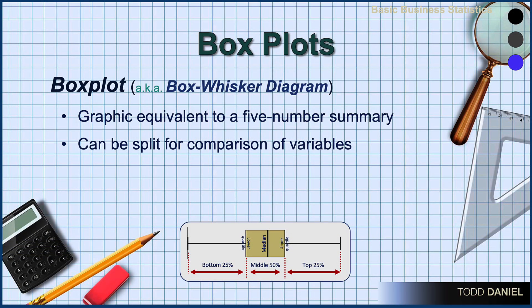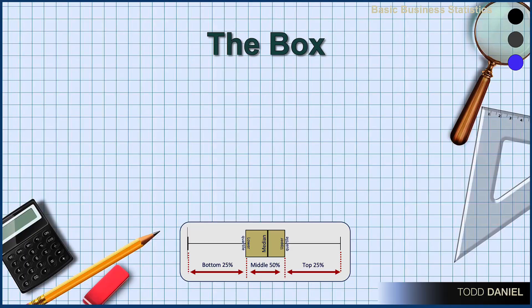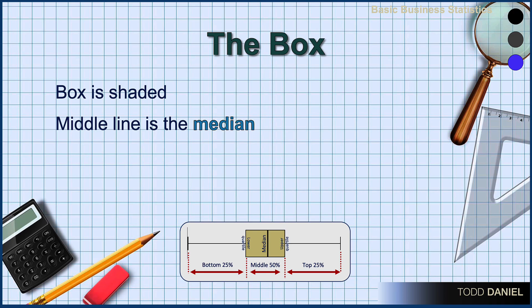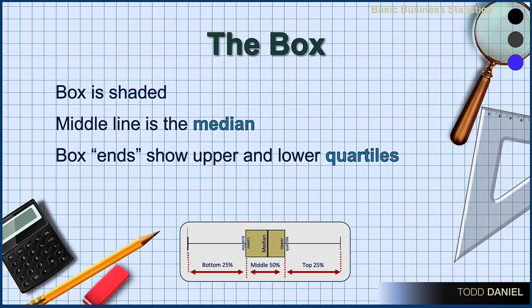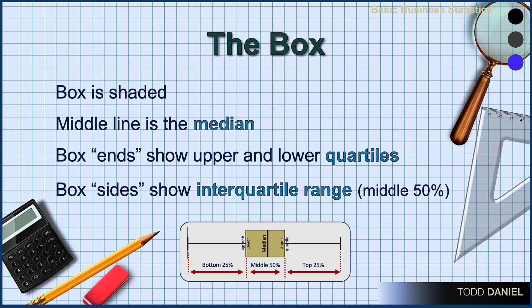The box plot is sometimes called a box-and-whisker diagram because the shaded rectangle in the middle is the box, and the lines sticking out are the whiskers. The box plot is the graphic equivalent to a five-number summary and can be split for comparisons between subgroups. The box is the shaded rectangle in the middle. The heavy line in the middle represents the median. If normally distributed, the median would be in the exact center of the box. The box ends show the upper and lower quartiles, Q1 and Q3. The length of the box is the interquartile range — the middle 50 percent of the distribution.